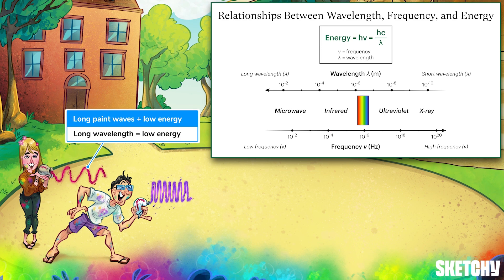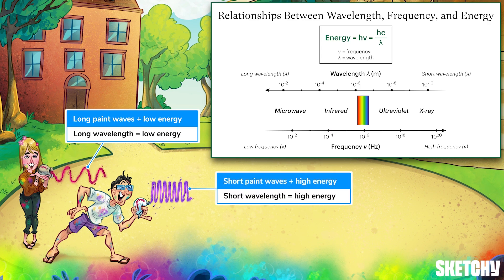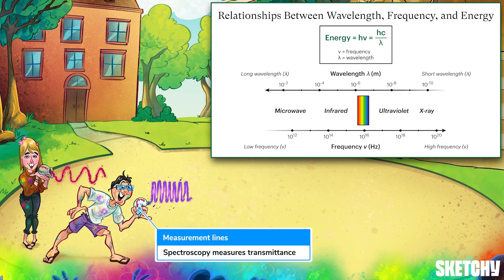This low-energy gal is shooting off a long, slow wavelength of paint to remind you that longer wavelengths of light are lower energy and lower frequency. In contrast, this high-energy guy is chucking an intensely fast and short paint wave — because short wavelengths pack a lot of punch, or energy, and have high frequencies.